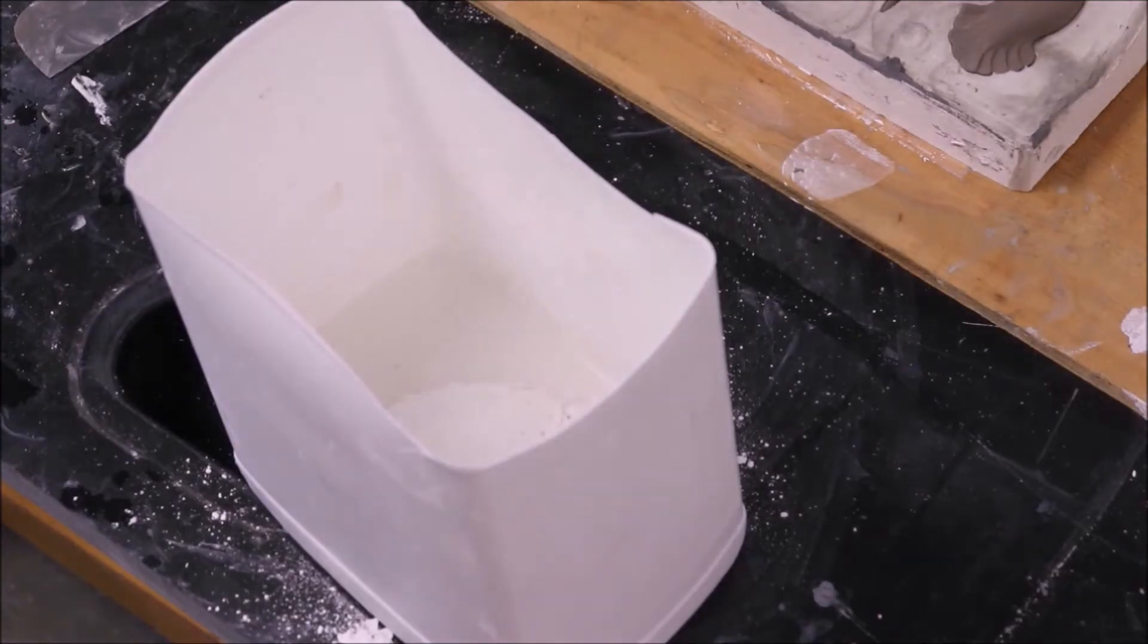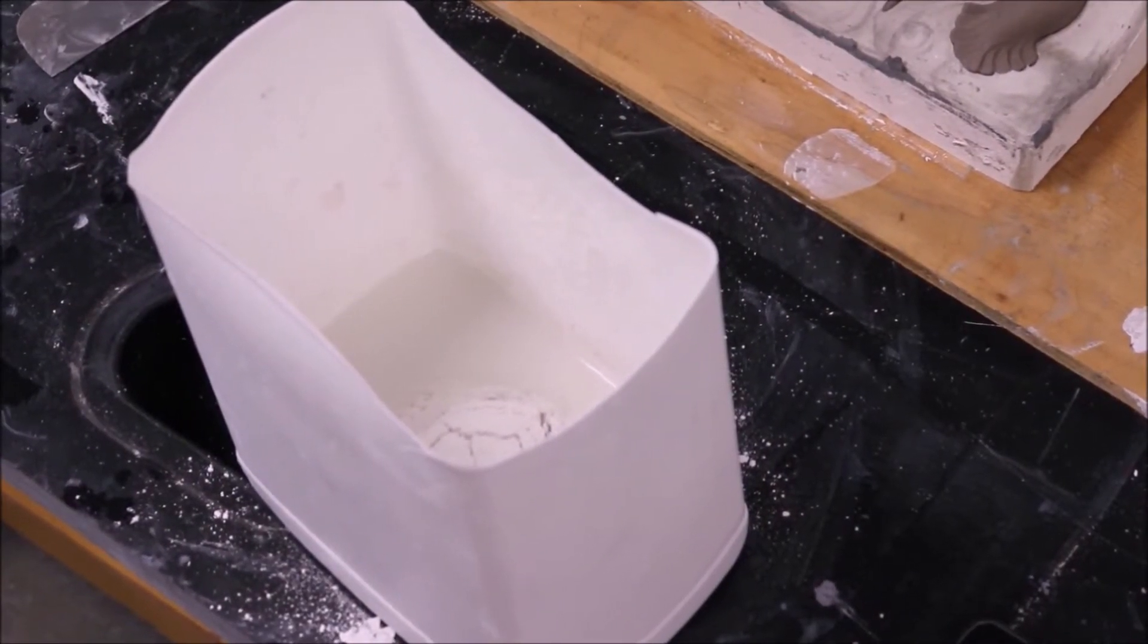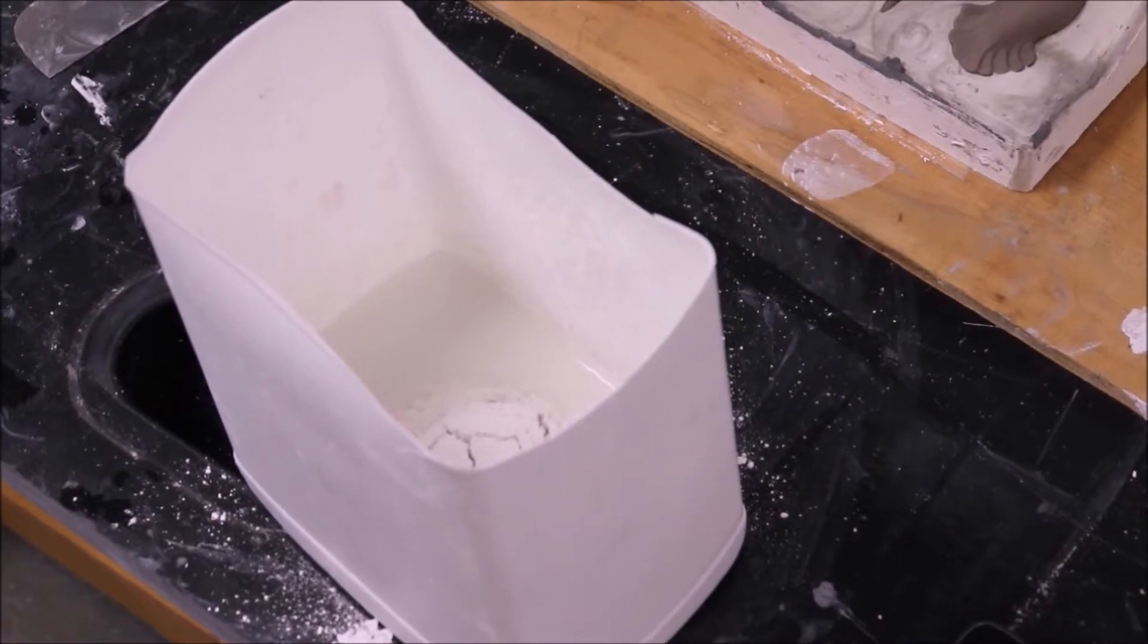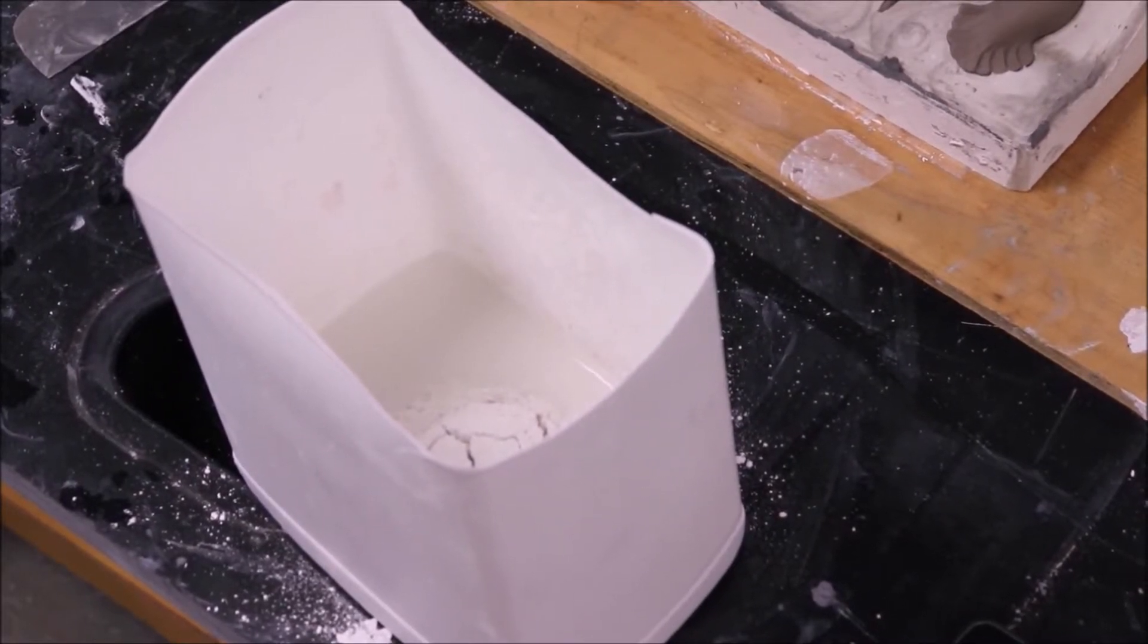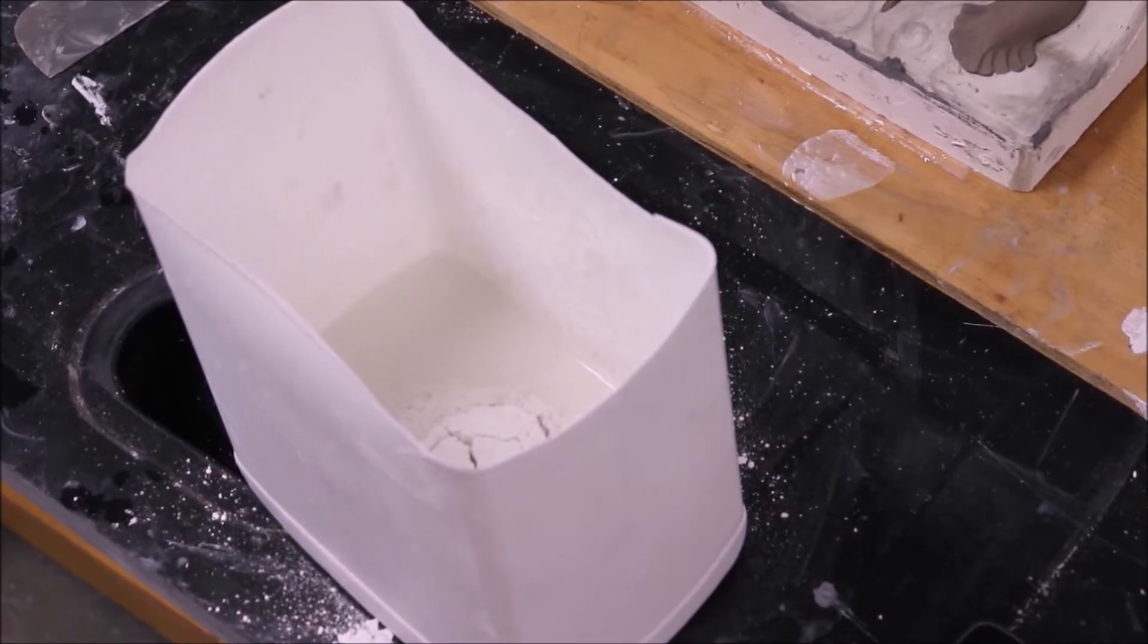Once you sift the plaster into the water, this is what is referred to as slaking. So what that means is you want the plaster to soak in all of that water. Generally, you can let your plaster slake for 3 to maybe 20 minutes, definitely not longer than 20 minutes. The reason you don't want your plaster to slake for more than 20 minutes is because by then it will begin to set up and you won't be able to do anything with it.